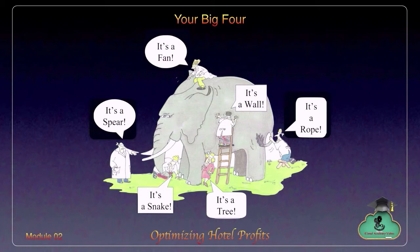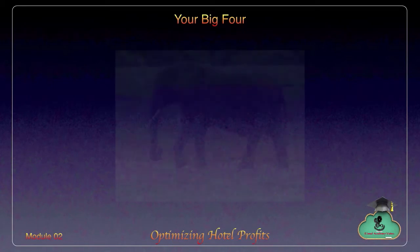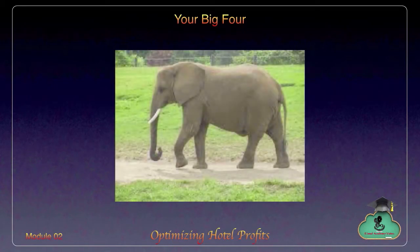A passerby who could see the animal fully stopped all of them and told them that it is an elephant — an animal with ears, eyes, trunk, tusks, tail, and a big body. He told them not to look at the parts individually, but to put them together, see relationships, and then conclude what it looks like and what it is.